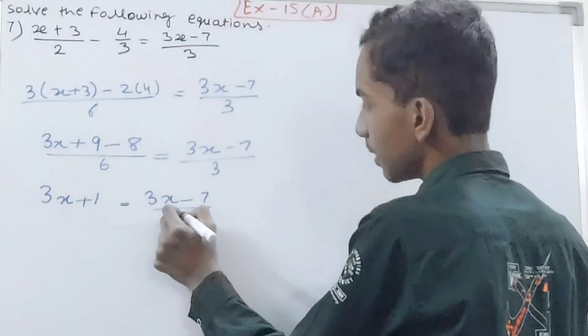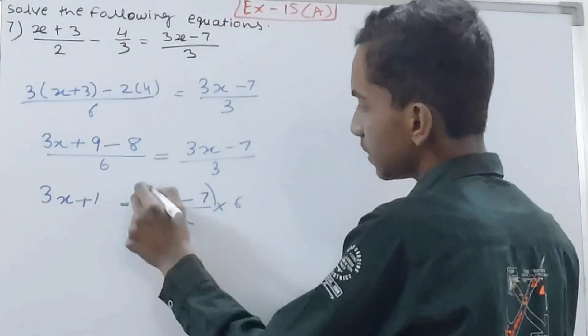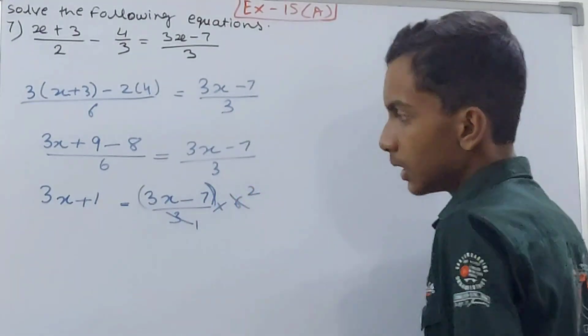This thing is in brackets, right? So 3 and 6 I can cancel, 1 and 2. Now I'll have 3x+1 = 2(3x-7).